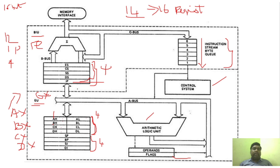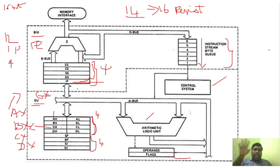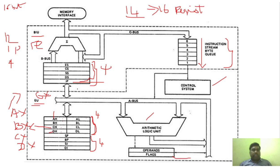And similarly, what is B? BX is the base register — it is used as a general purpose register for temporary storage. What is C? The CX register is used in multiple iterations — for example, in programs that loop the same instructions again and again, the C register holds the number of times that instruction is executed, acting as a counter. And DX is again a data register — a general purpose register used for temporary storage.